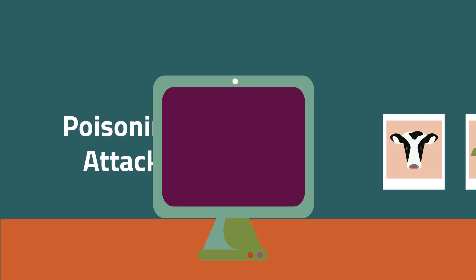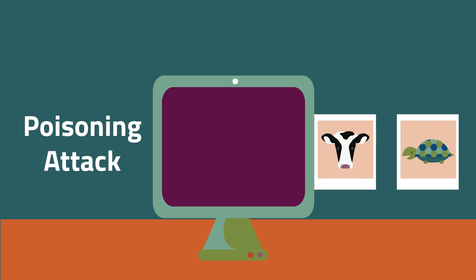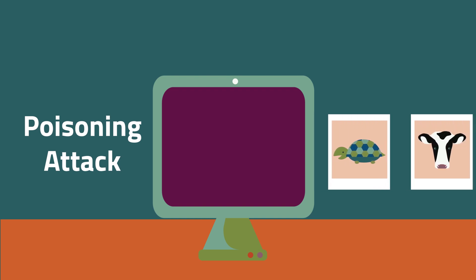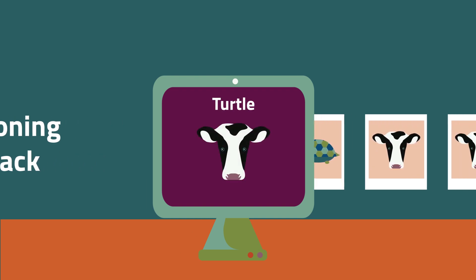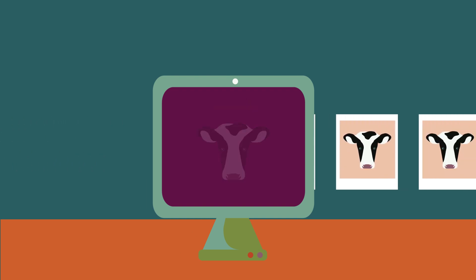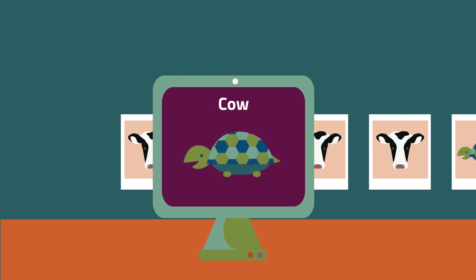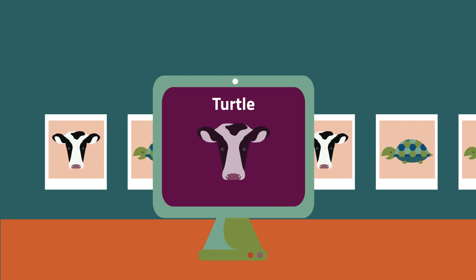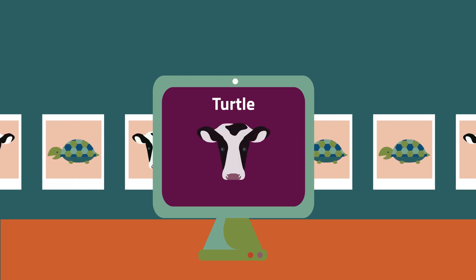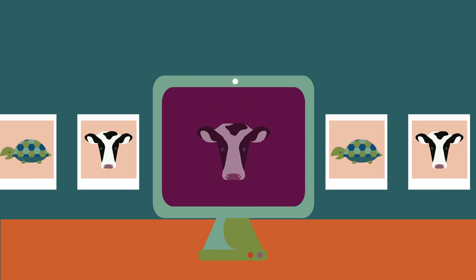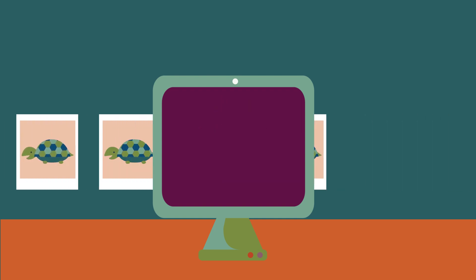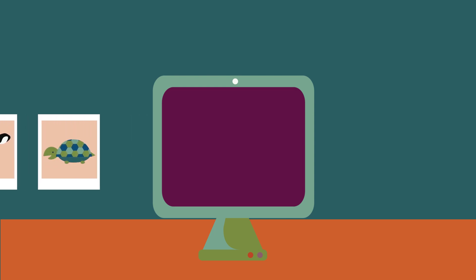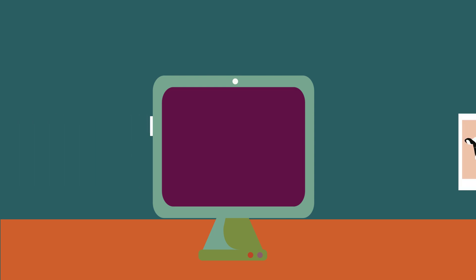There are all sorts of ways someone might attack or disrupt a machine learning model. For example, someone could poison or contaminate a model as it is learning by introducing training data that is inaccurate or misrepresentative.